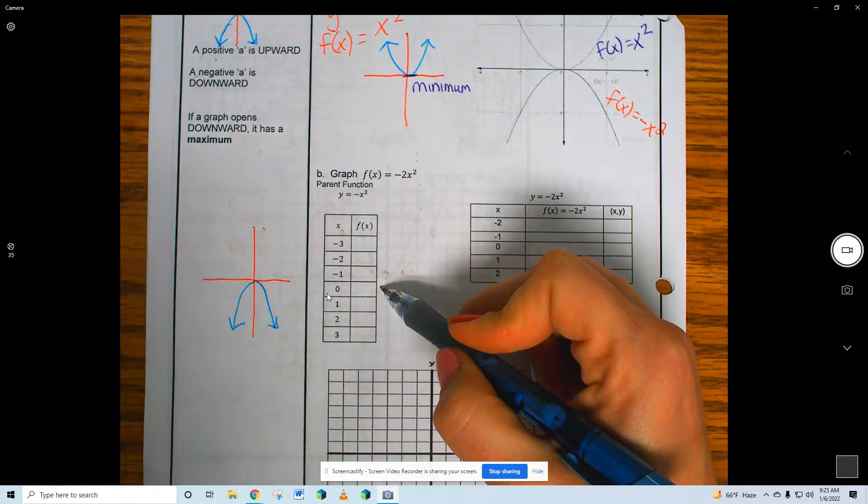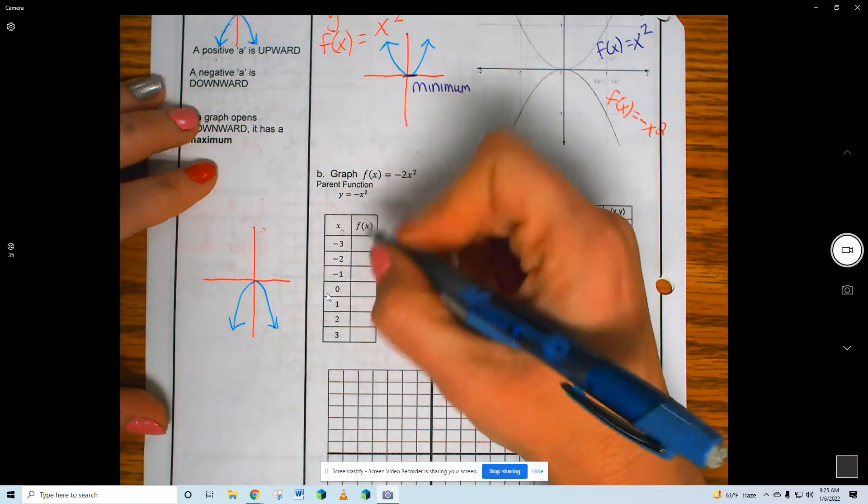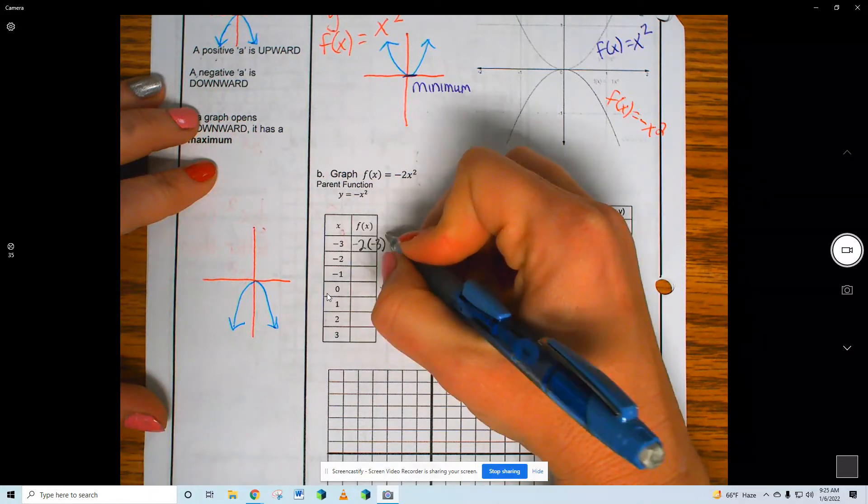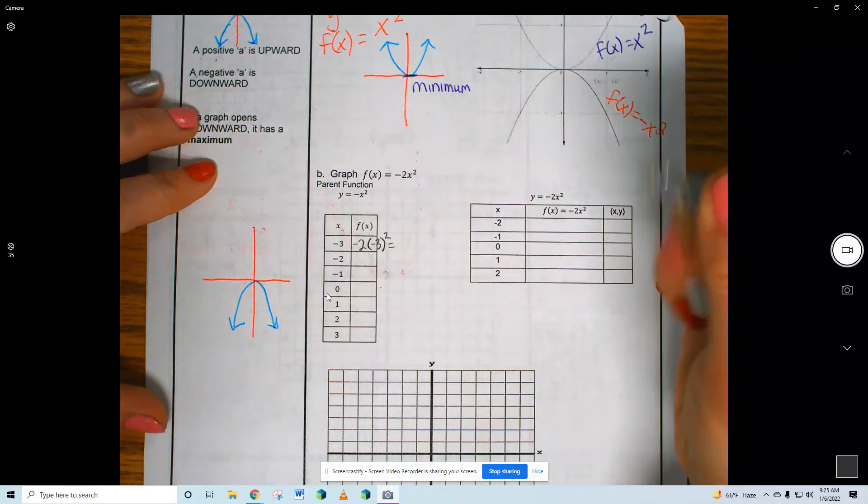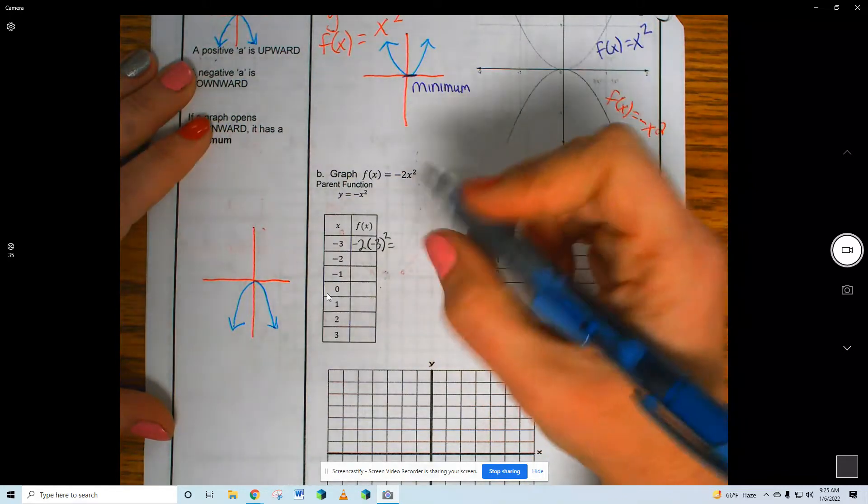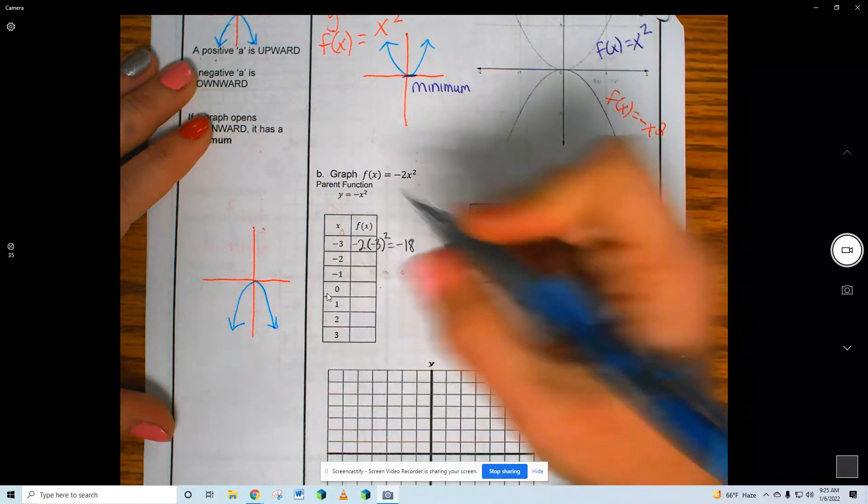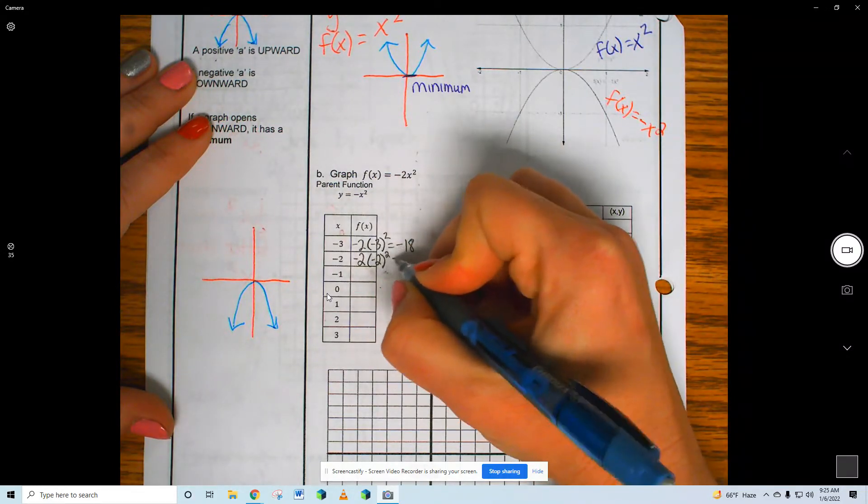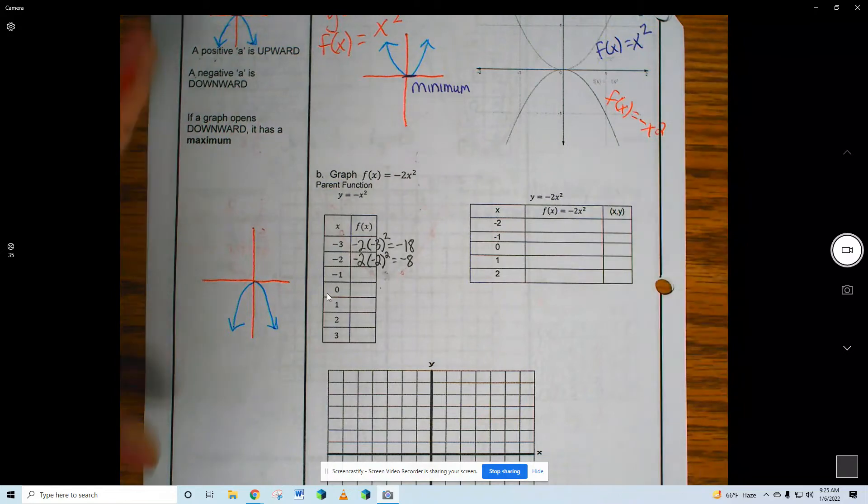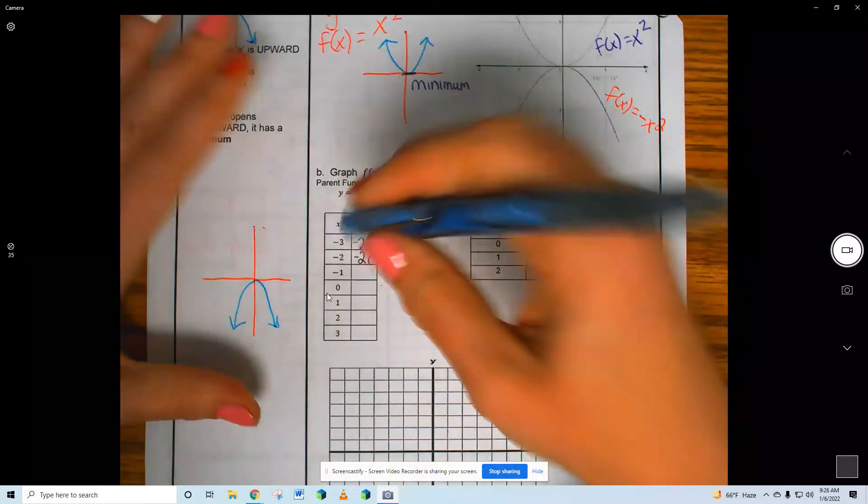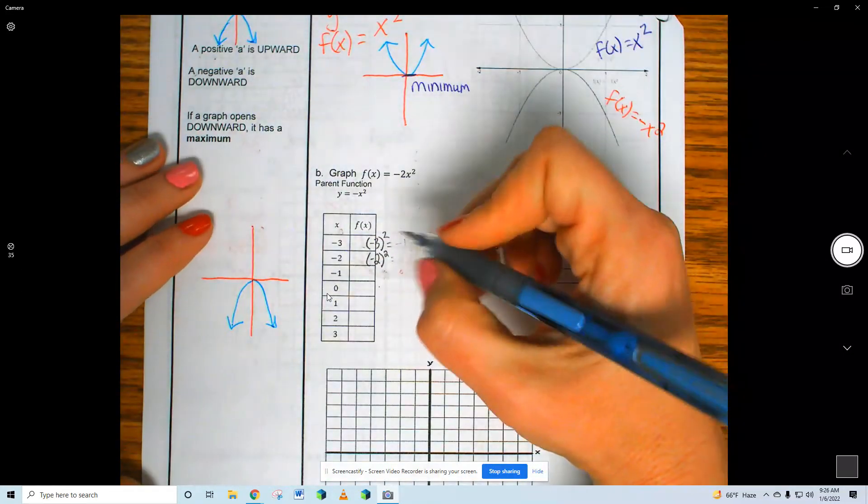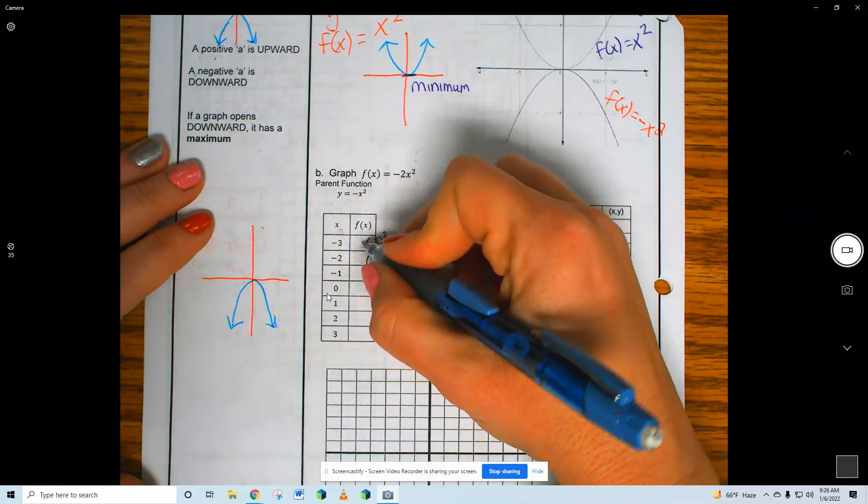On homework tonight, you're going to graph the parent function as well. Negative 2 times negative 3 squared. So the downward would be, well, this number is going to be way too high, but anyways, it's going to be negative 18. Negative 2 times negative 2 squared. Negative 2 times 4, negative 8. Or actually, I'm just doing the parent function, aren't I? Sorry guys. The 2 is going to be in the next table of values. Just negative X squared.